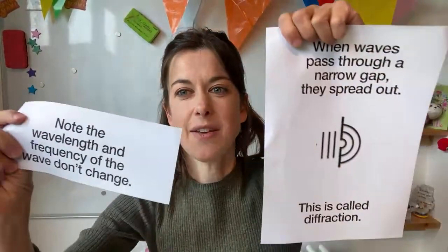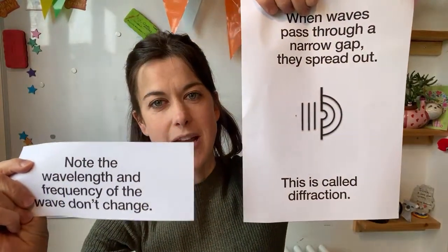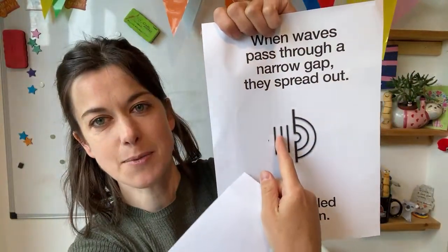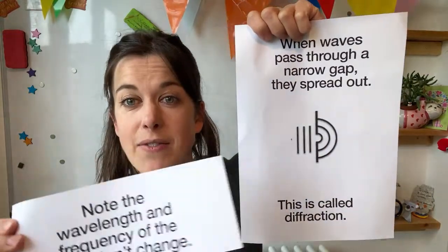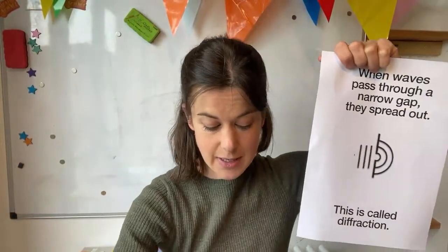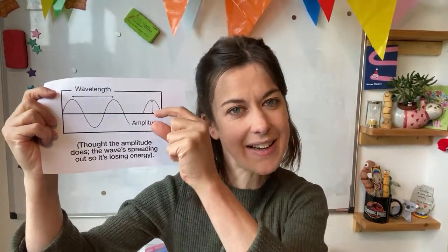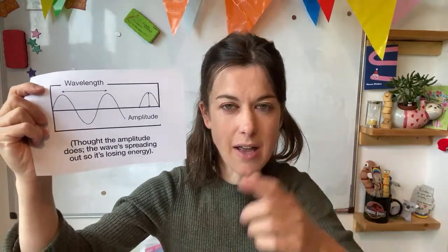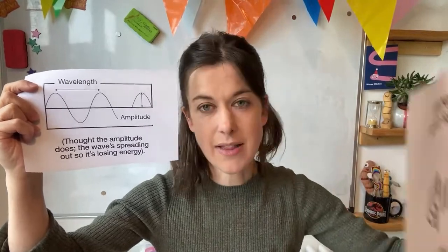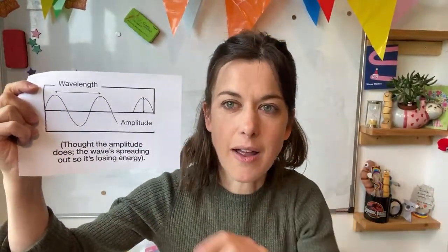Please note that the frequency and the wavelength of the wave do not change. The wavelength is the same on both sides — even when it's spreading out, the wavelength is still the same. But just as an FYI — you don't need this for your GCSE — the amplitude of the wave, like the height, does change because the wave is spreading out and losing energy. So the amount of waves per second and the wavelength stays the same, but the amplitude has changed.